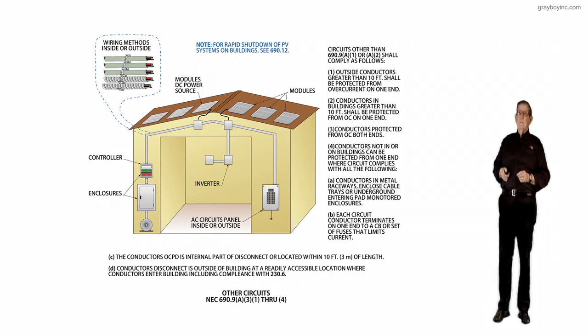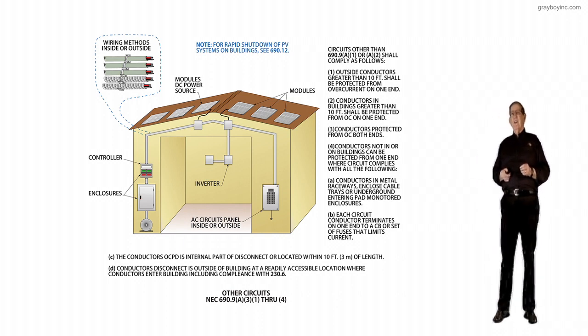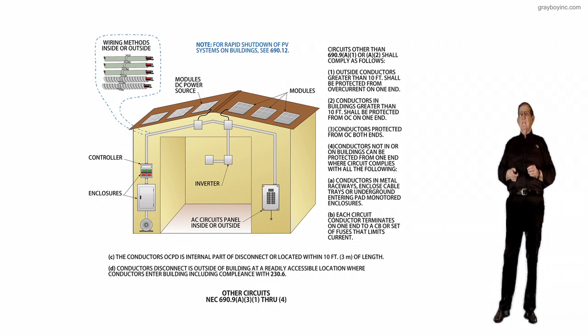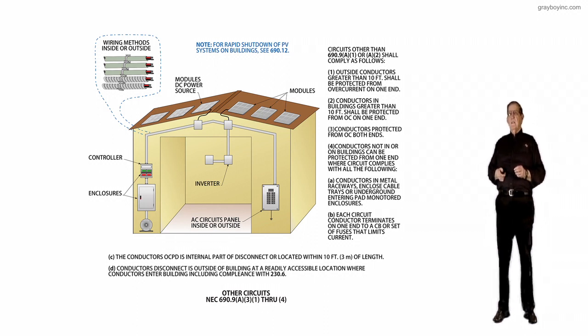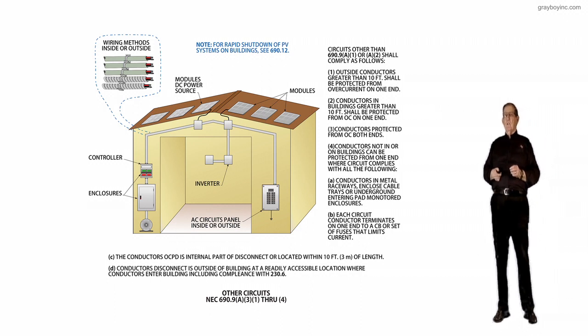So we have to comply with A and B. So A: conductors in metal raceways, enclosed cable trays, or underground entering pad-mounted enclosures.